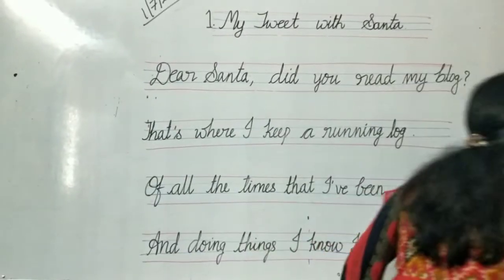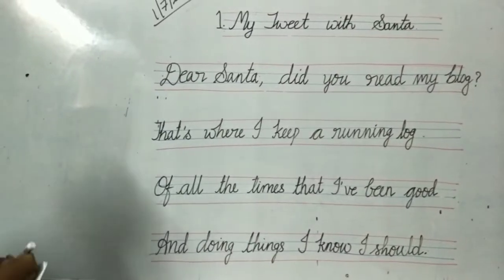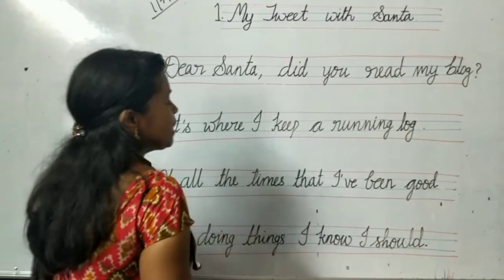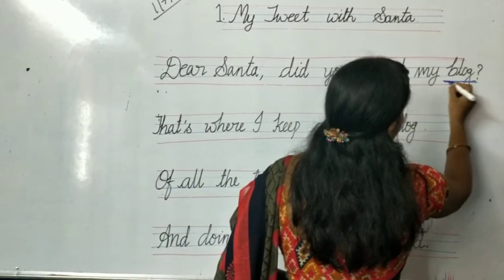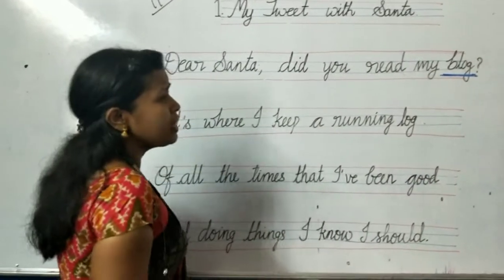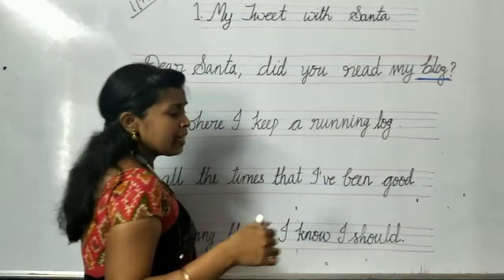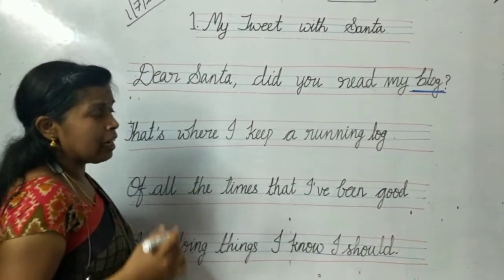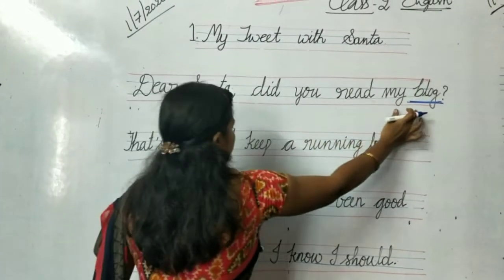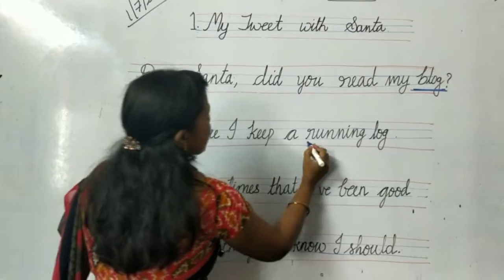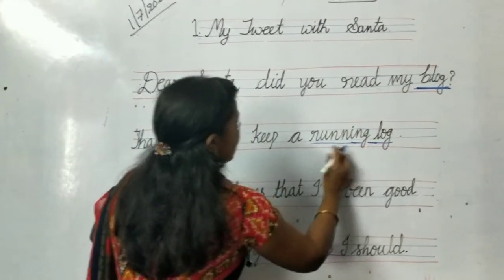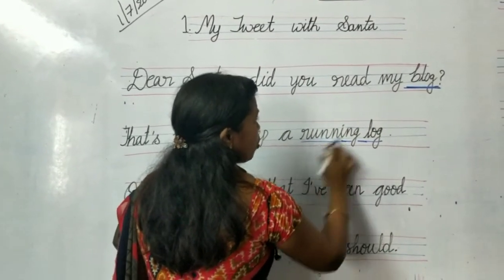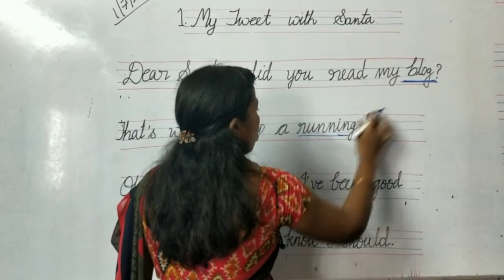Now children, let me say what are the hard words in this stanza. 'Dear Santa' we already learned in the first stanza. Now let us see: 'blog' — B-L-O-G, blog. The boy is sending messages through Facebook which he updates regularly — that message is called a blog. And the next one is 'running log.' Blog and running log have the same meaning — what he is sending regularly is called a running log. So both blog and running log come to the same meaning.